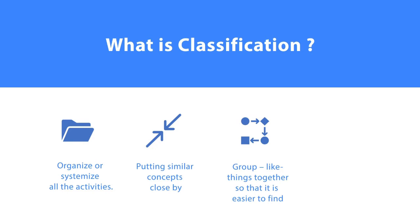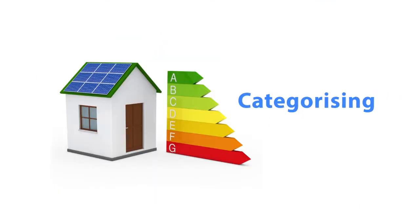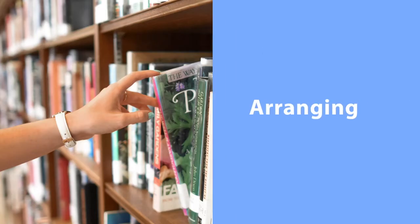Typically, in classification, items are arranged in a hierarchical tree structure. Friends, generally we use different terms to represent classification. These terms are organizing, categorizing, grouping, arranging and ordering. All these are very close to classification.